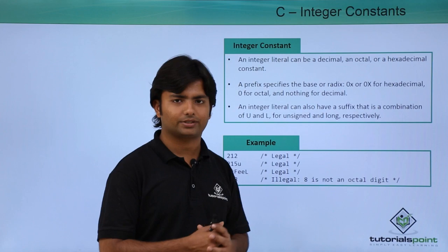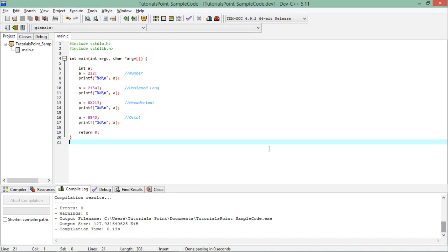Passing a constant integer value to any integer kind of variable—let's see what kind of value we can pass. Like here you can see, first of all I have just passed a normal integer value, that is 212, which is a normal number, and obviously we can assign that particular value to any integer.